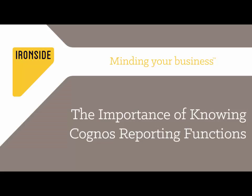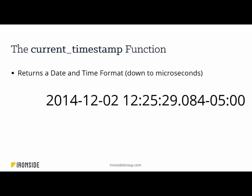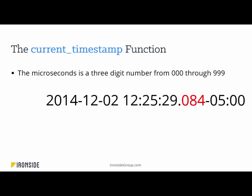First, let's start with the importance of knowing Cognos Reporting functions. There are many functions in Cognos that are extremely useful. One of them is the current timestamp function. This returns a date and time format down to microseconds — so we'll see the year, month, day, hour, minute, second, and microsecond as a three-digit number. That microsecond ranges from 000 through 999, and this is the number we're going to extract. It won't truly be a random number, but it'll be in that range depending on when the report is run in the CPU cycle.